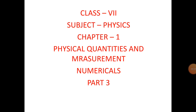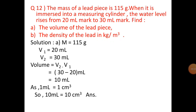Today we will be solving our leftover numericals. Question number 12: The mass of a lid piece is 115 grams. When it is submerged in a measuring cylinder, the water level rises from the 20 milliliter mark to the 30 milliliter mark. Find the volume of the lid piece, and part B is the density of the lid in kg per meter cube.